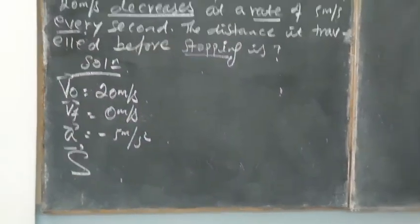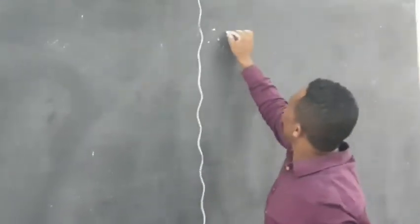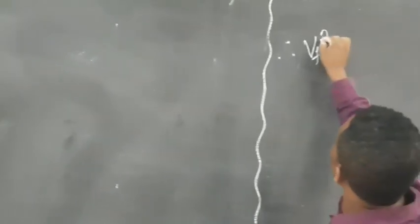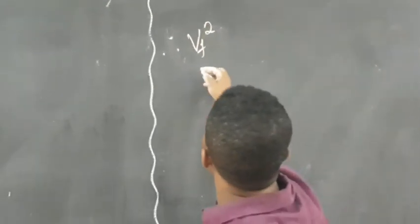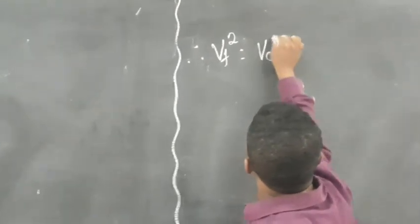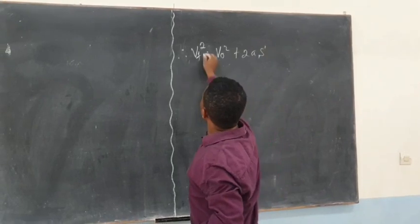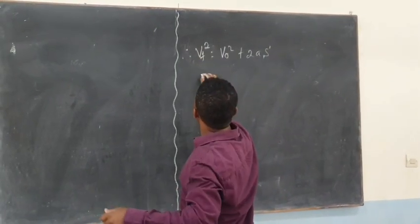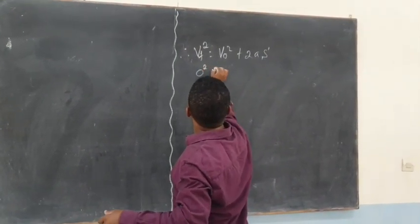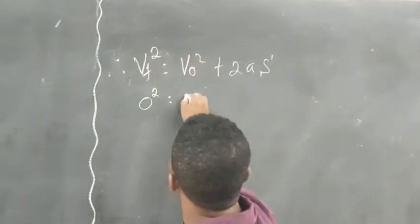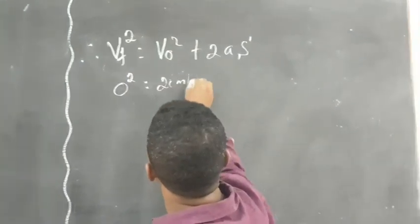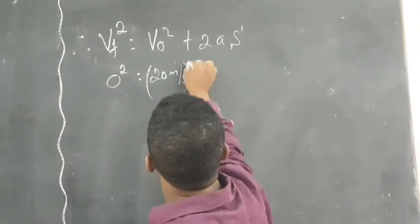Therefore my dears, we now use this formula: square of V final, which is equal to square of V initial plus twice of A times S. And then mark, this is given to us as 0, and then this is given to us which is 20 m per second, and then square of S.